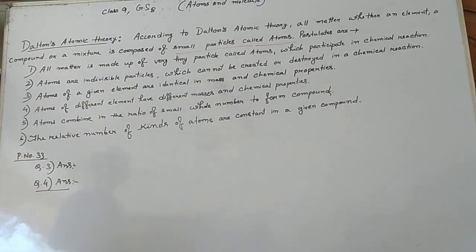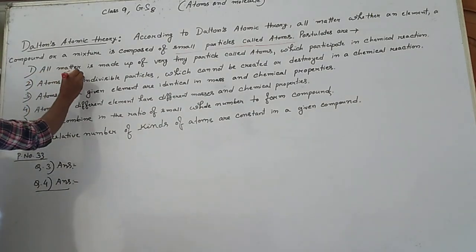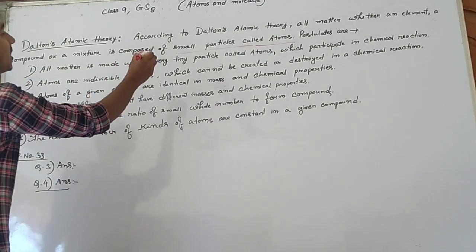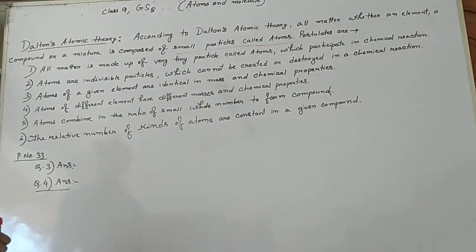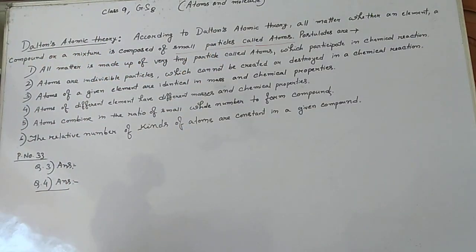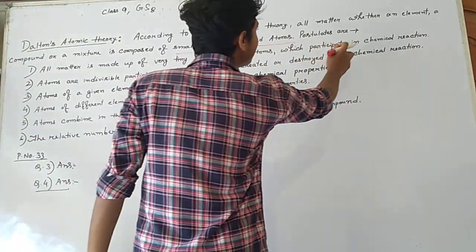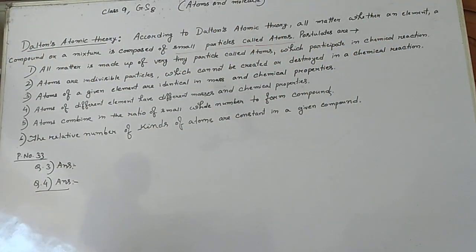Dalton gives six postulates, and the first postulate is: all matter is made up of very tiny particles called atoms. You have to remember that atoms participate in chemical reactions — this is a very important point.